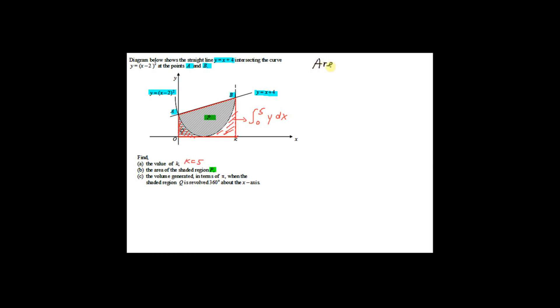The area under the curve is given by integration from 0 to k, where k is 5, of y dx. So the area of P equals the area of the trapezium minus integration from 0 to 5 of y dx. The trapezium formula is half times (A plus B) times height.